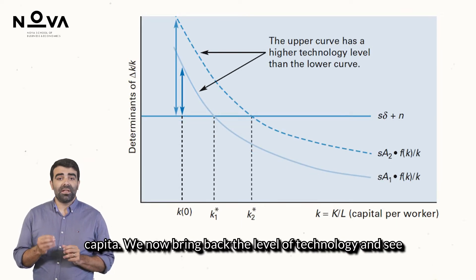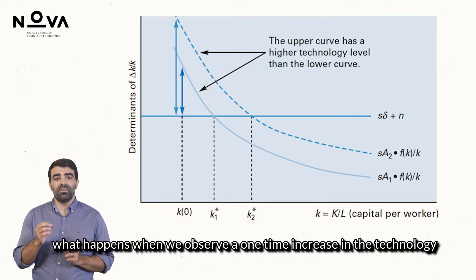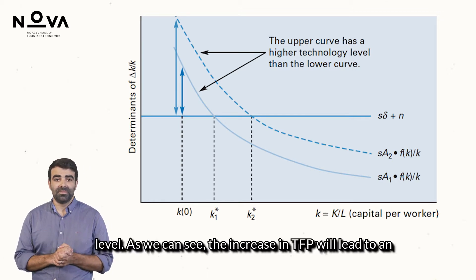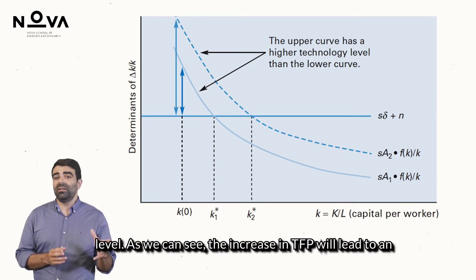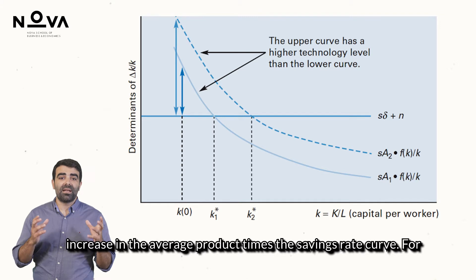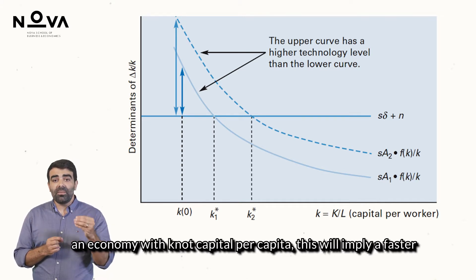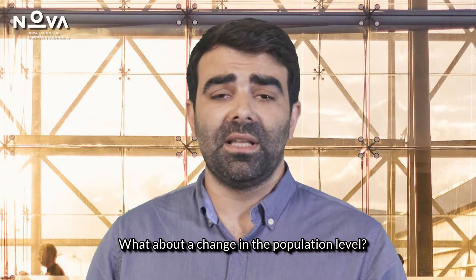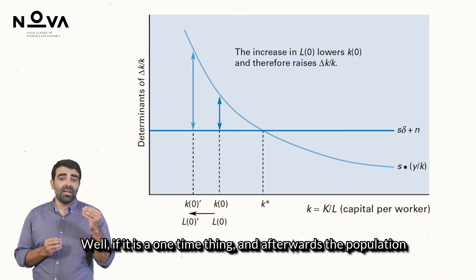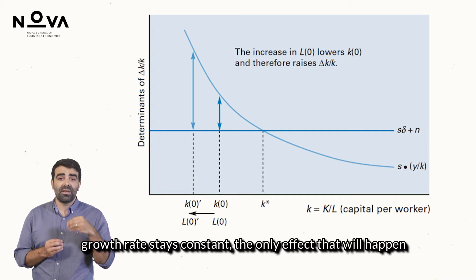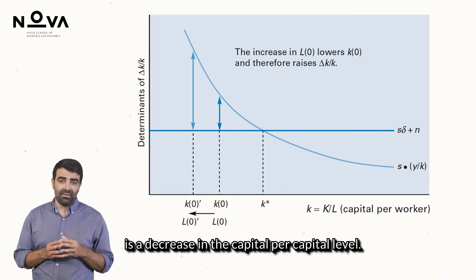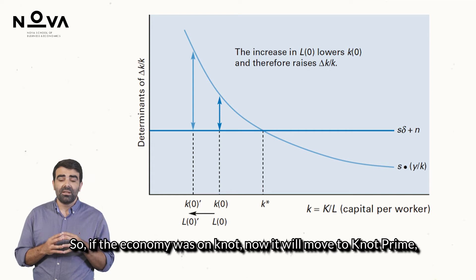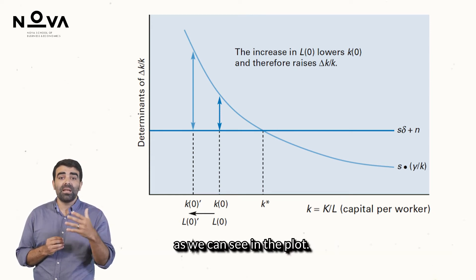We now bring back the level of technology and see what happens when we observe a one-time increase in the technology level. As we can see, the increase in TFP will lead to an increase in the average product times the savings curve. For an economy with K-naught per capita, this will imply a faster growth rate towards a higher level of the steady-state. What about a change in the population level? Well, if it is a one-time thing and afterwards the population growth rate stays constant, the only effect that will happen is a decrease in the capital per capita level. So, if the economy was on K-naught, now it will move to K-naught prime as we can see in the plot.